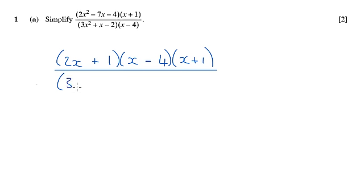For the bottom, it's going to be a 3x and an x. The only option, because we've got a 2 at the end, is a 2 and a 1, and it's just a case of working out where the 2 and the 1 need to go.